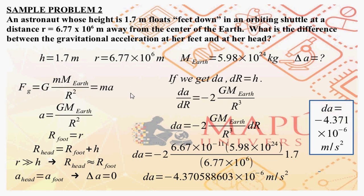Moving now to the next example — sample problem number two. An astronaut whose height is 1.7 meters floats feet down in an orbiting shuttle at a distance of r equals 6.77 times 10 to the 6 meters from the center of the earth. What is the difference in gravitational acceleration at the feet and at the head of the astronaut? Let h equal 1.7 meters and small r equal 6.77 times 10 to the 6 meters.